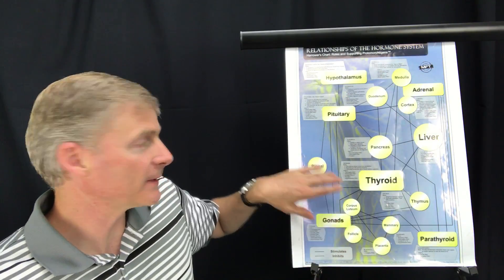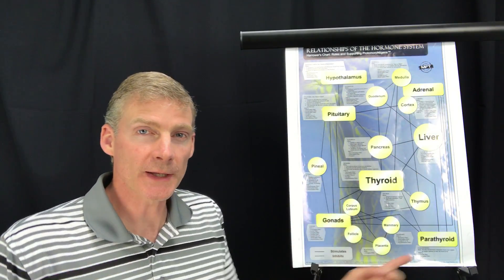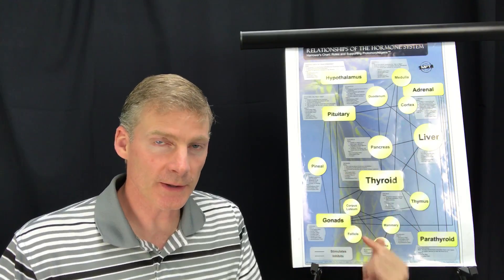But this is his chart that he created, and it shows all these different endocrine organs and how they're related to each other. There's lines throughout here and they'll inhibit or stimulate each other.